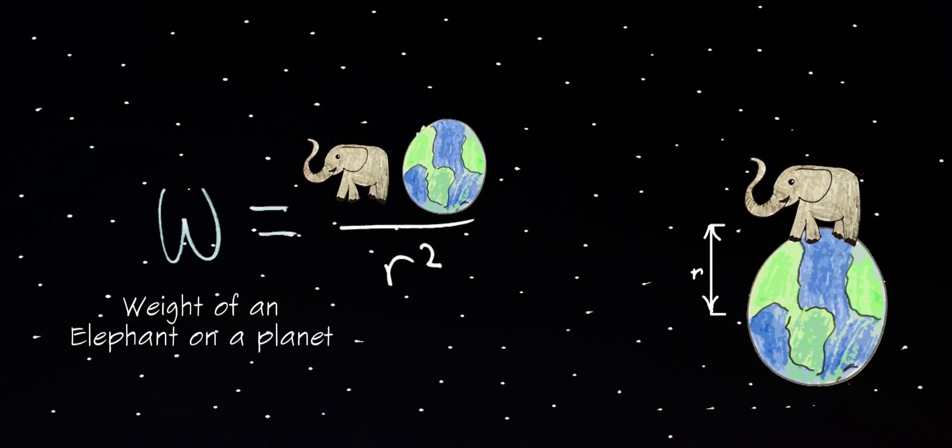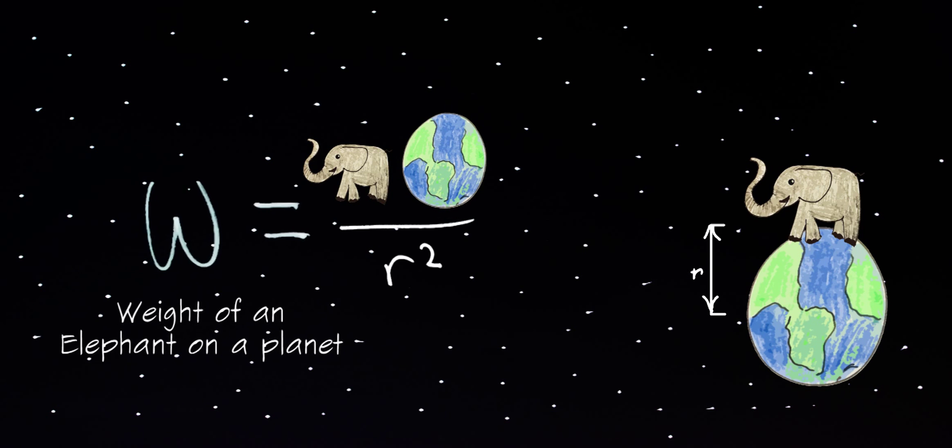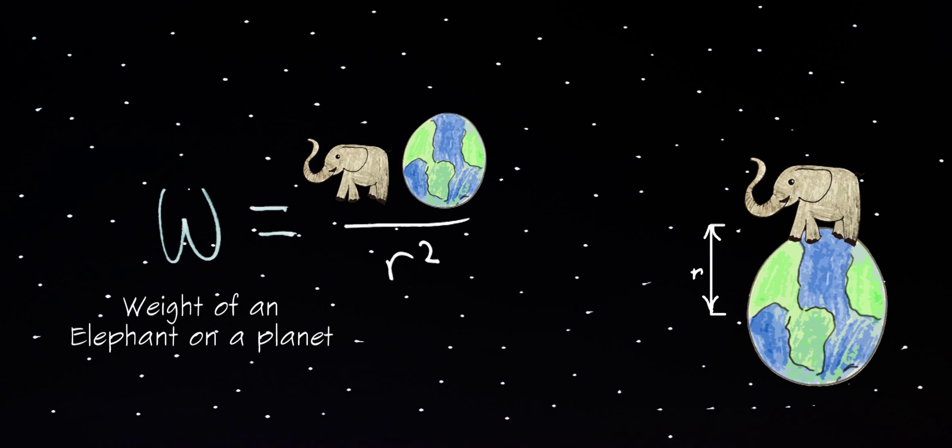What the formula is really saying is that the heavier the planet is in mass, the heavier the elephant's weight would become, and the larger the planet is in size, the exponentially lighter the elephant would become.